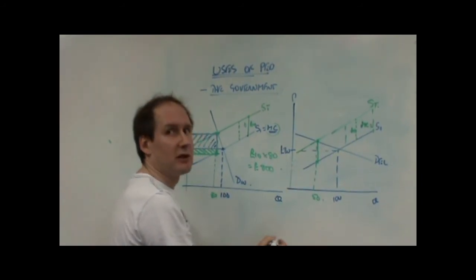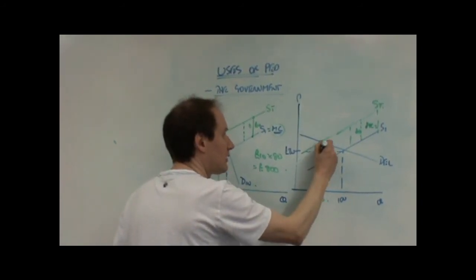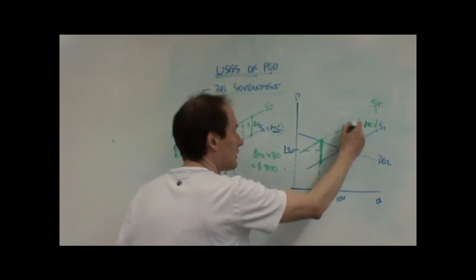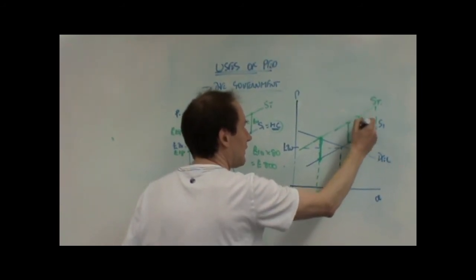Again, the original price was 20 pounds. That distance there reflects the tax per unit. Because it's the same as that distance. And it's the same as that distance. And so on.